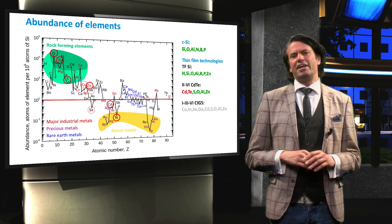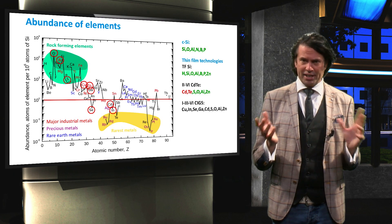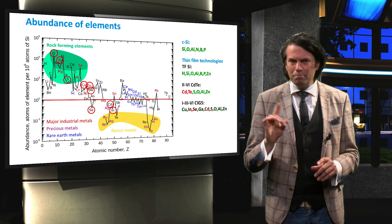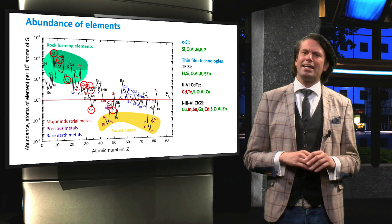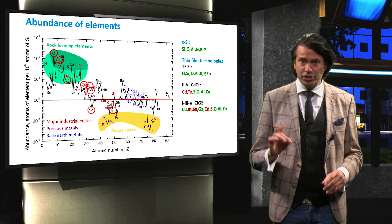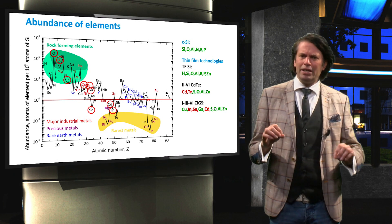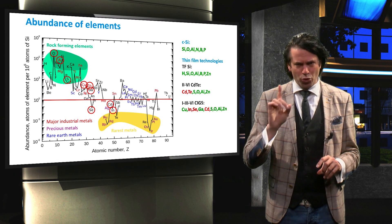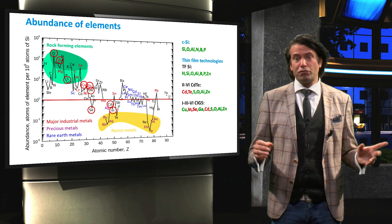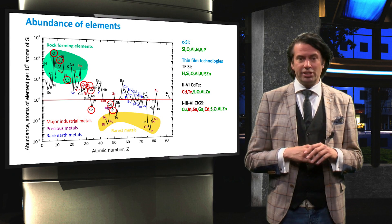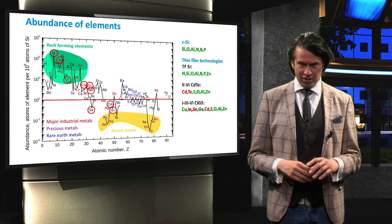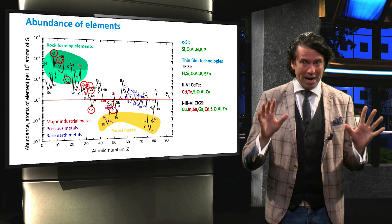CIGS faces similar issues. Copper and gallium are major industrial metals, but indium, selenide and cadmium are much less abundant. In addition, the current thin film display industry depends on indium as well. Because of the scarcity and toxicity of the required elements, the upscaling of the chalcogenide PV technologies might be limited.